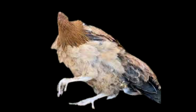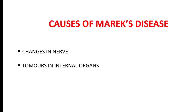Now let's look at the causes of Marek's disease. Marek's disease, also called Fowl Paralysis, is a common disease of chickens. It is caused by a herpesvirus which causes massive mortality and severe loss in production. It causes significant changes in nerves and causes tumors in internal organs.